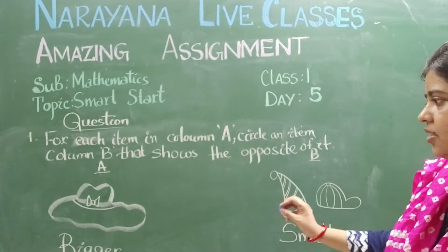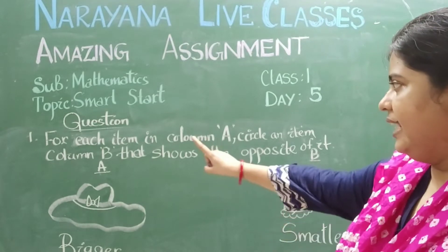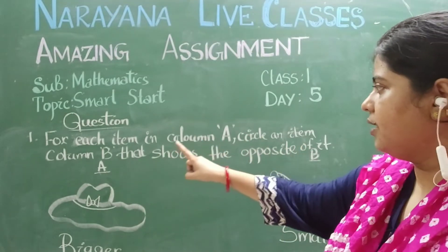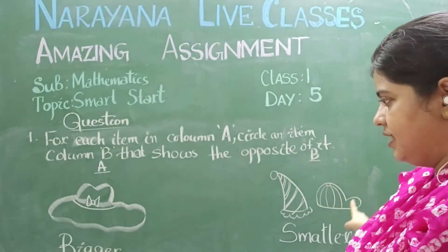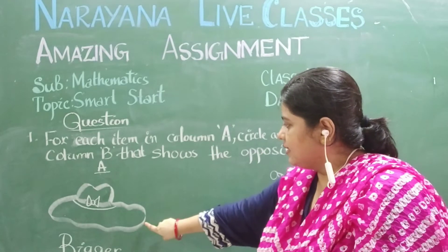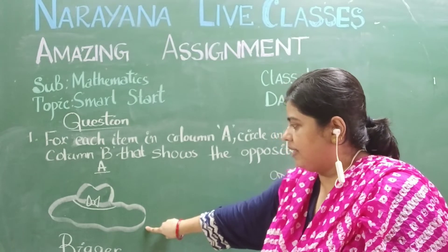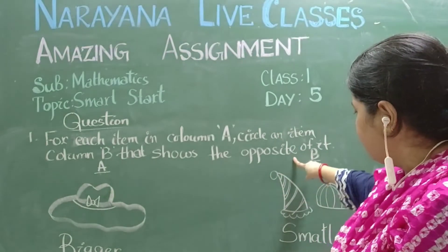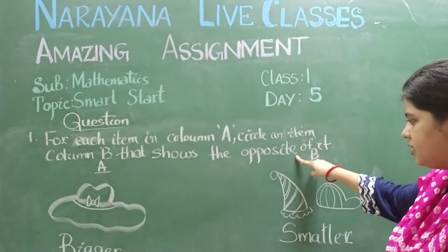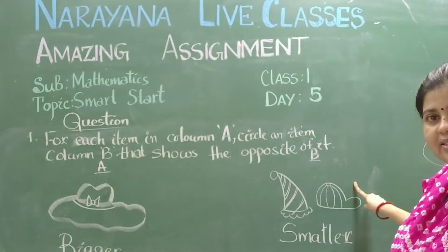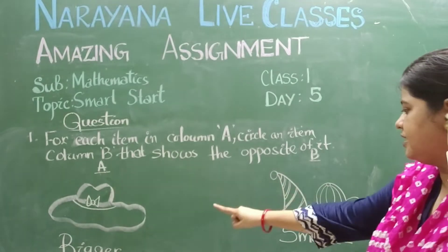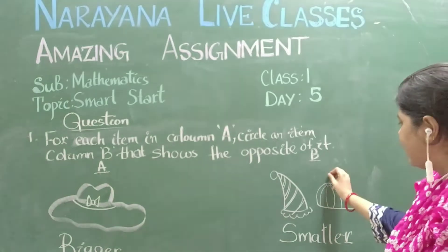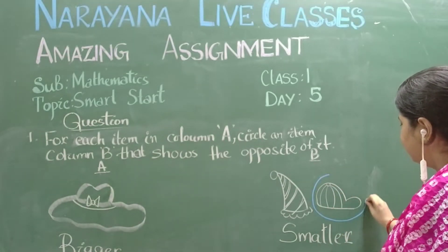The second question: for each item in column A, circle an item in column B that shows the opposite of it. The item in column A is a big hat. What we need to circle is the opposite one. The opposite is smaller, so which hat is smaller over here? We have to circle that one.